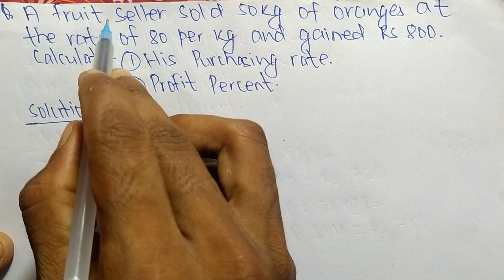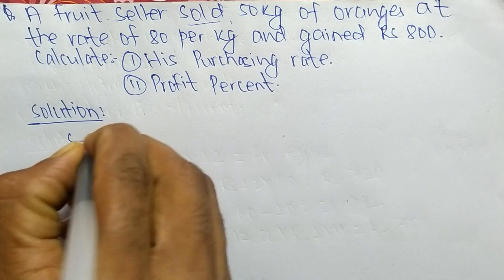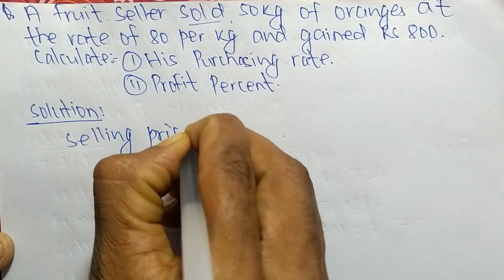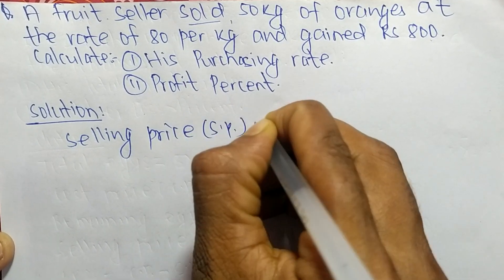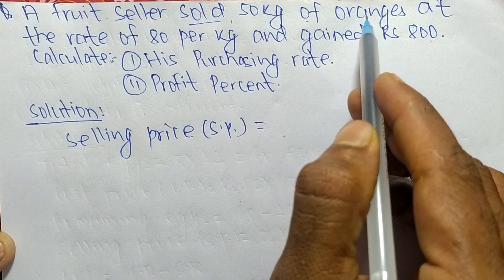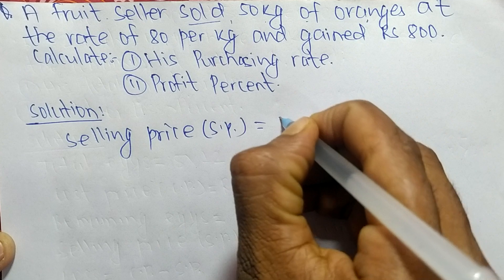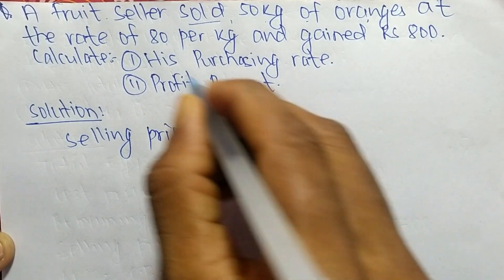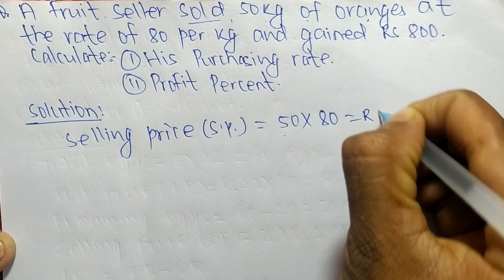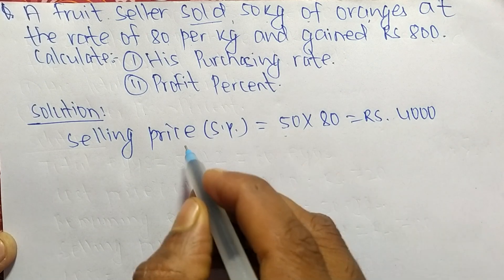A fruit seller sold oranges, so 'sold' means it is the selling price. The selling price (SP) is: 50 kg of oranges at the rate of 80 per kg. So total is 50 times 80, which equals Rs. 4000. So 4000 is the total selling price.